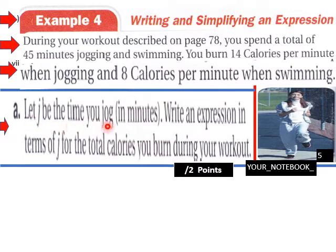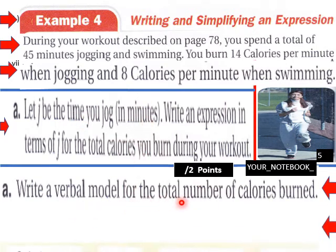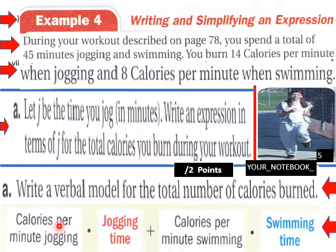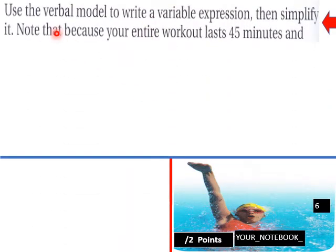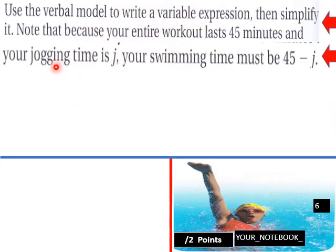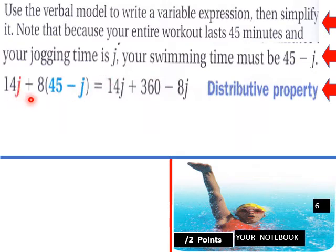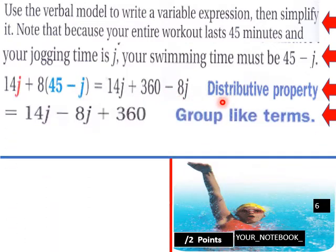Part A: Let J be the time you jog in minutes. Write an expression in terms of J for the total calories you burn during your workout. The verbal model is: calories per minute jogging times jogging time, plus calories per minute swimming times swimming time. Because your entire workout lasts 45 minutes and jogging time is J, your swimming time must be 45 minus J. So the expression is 14J plus 8 times the quantity 45 minus J — this is your swimming portion.